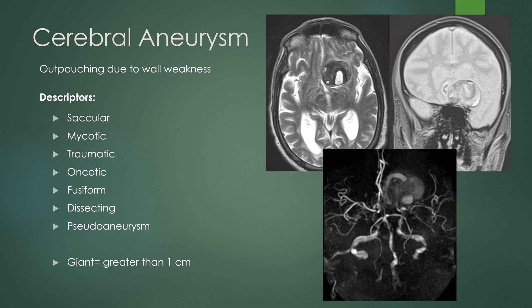A giant aneurysm is defined as one that measures greater than one centimeter. On T2-weighted imaging it usually has heterogeneous signal — areas of low and high signal depending on whether there's clot or flow. On a hemosiderin-sensitive sequence the rim is dark with heterogeneous signal centrally, and on MRA the aneurysm is also visible.